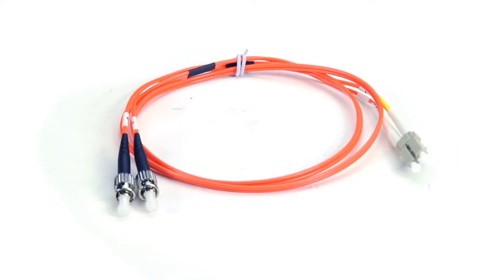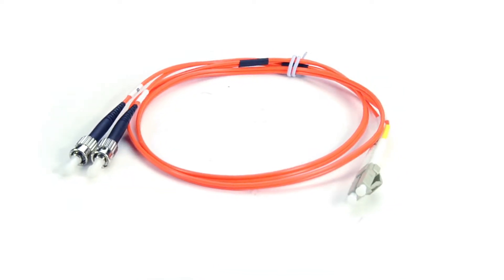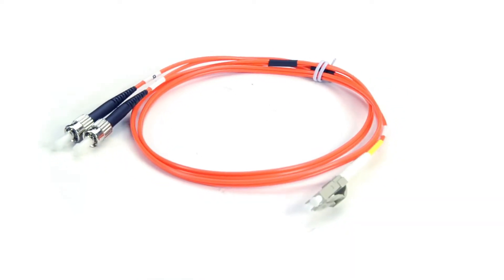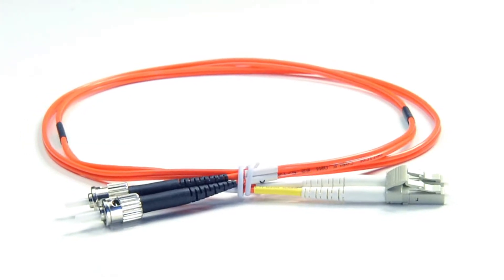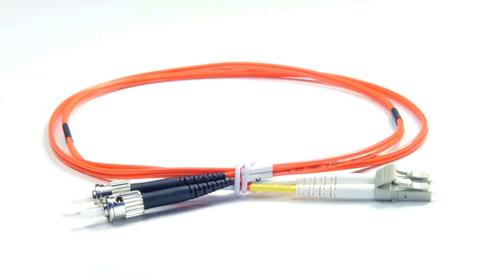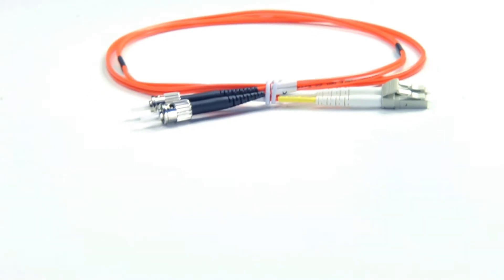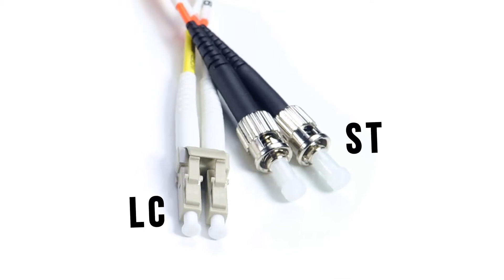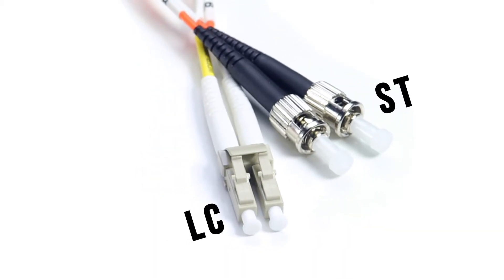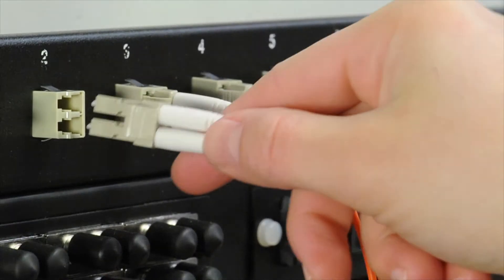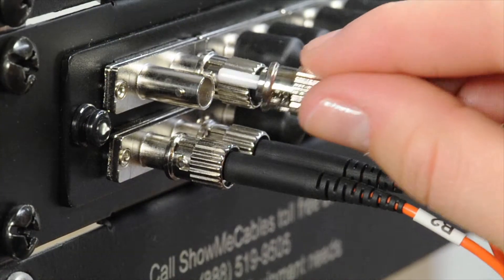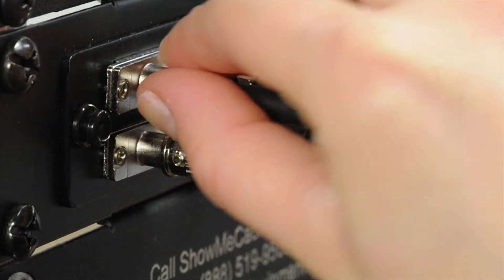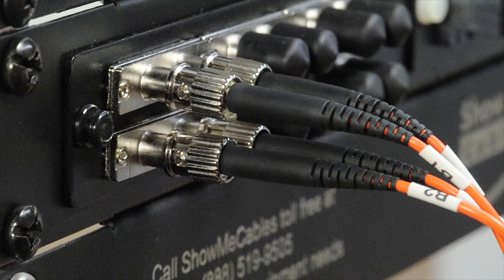This is an LC to ST multi-mode duplex fiber cable. It features two LC connectors on one end and two ST connectors on the other end. An LC connector has a small form factor design with a molded plug casing that has a push and pull locking system, while an ST connector uses a stick and twist locking system.